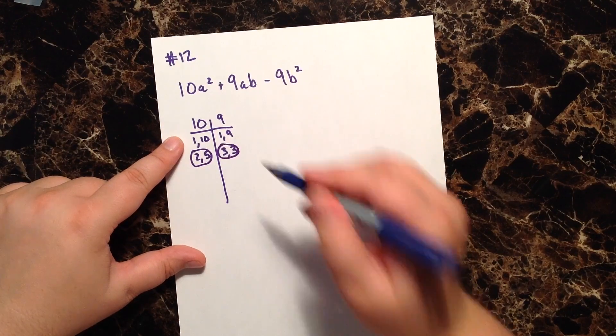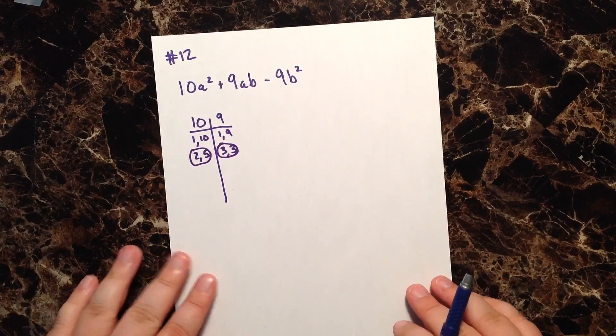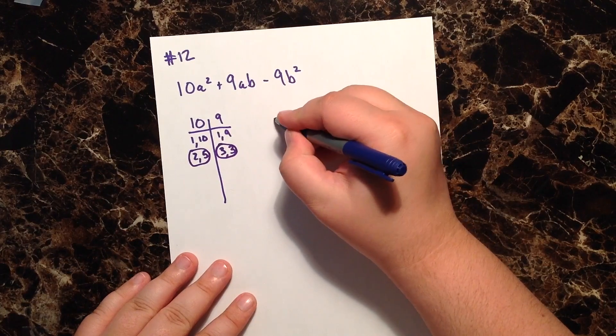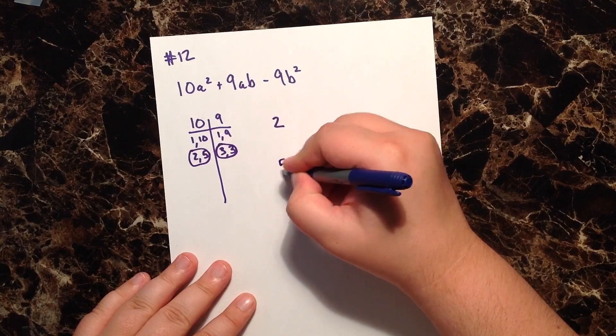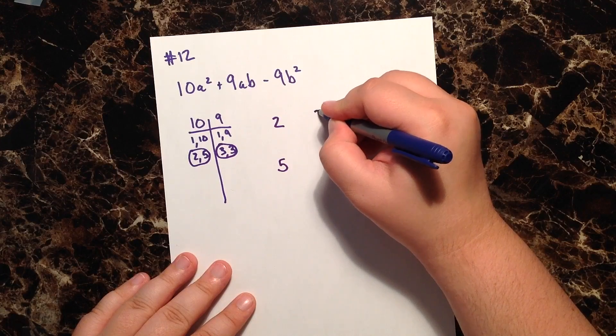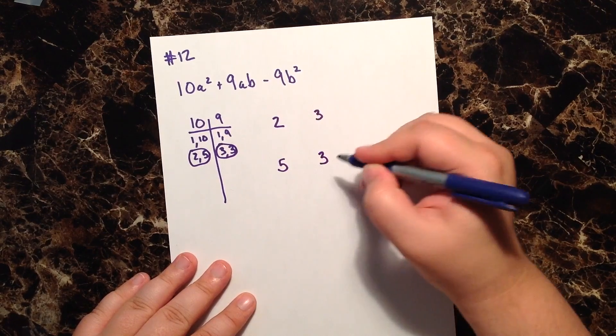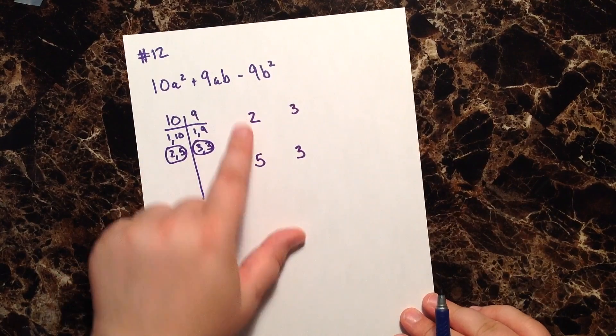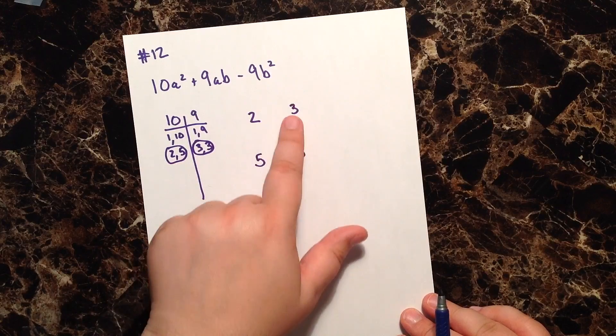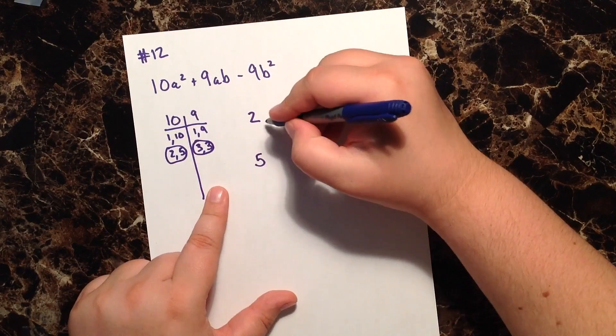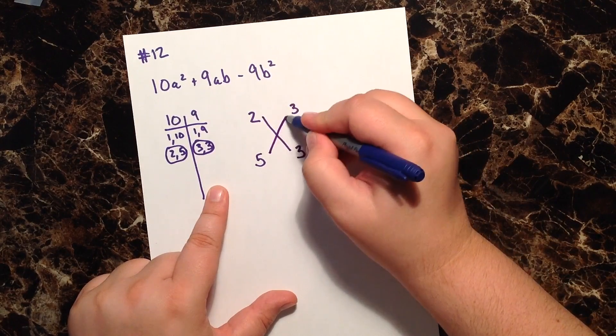And again, 3 and 3 are closer together than 1 and 9. So we're going to split up our factors and see what we get. So 2 and 5, 2 and 5, 3 and 3, 3 and 3, and this is our scissors.